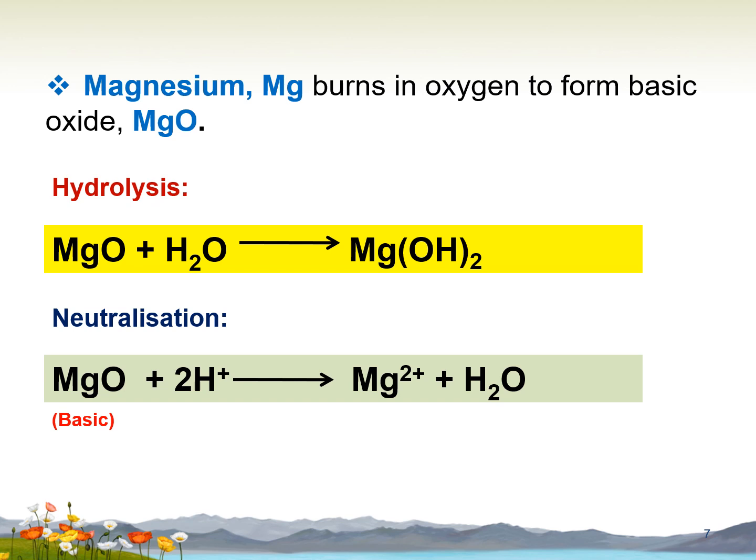Magnesium burns in oxygen to form basic oxide MgO. Magnesium oxide reacts with water to form magnesium hydroxide. The neutralization reaction occurs when magnesium oxide, which is a basic oxide, reacts with acid H⁺ to form Mg²⁺ and water.